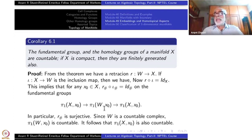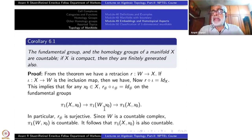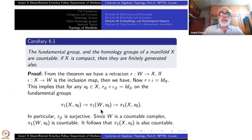W is a countable CW complex. A countable CW complex has countably many generators for π₁ — you only have to look at the one-skeleton. Any group generated over a countable set is itself countable. Therefore π₁(W) is countable. Since R-star is a surjective homomorphism, π₁(X) is also countable.